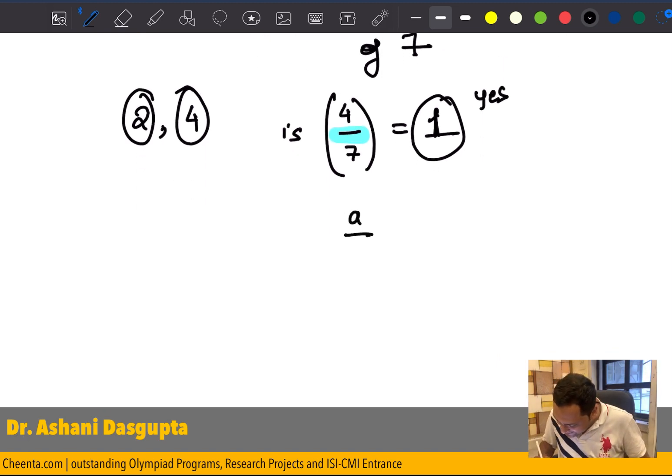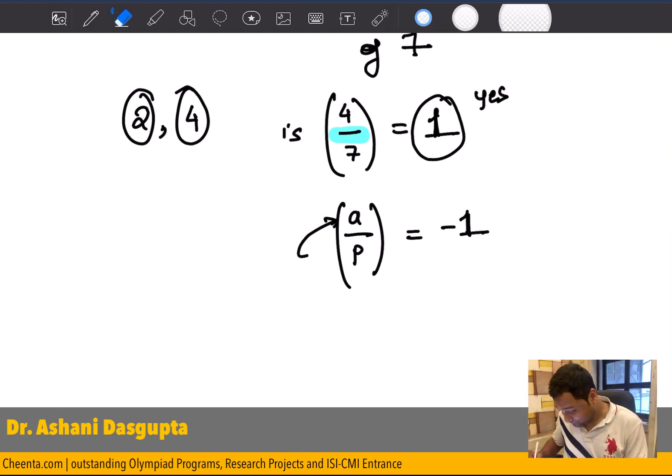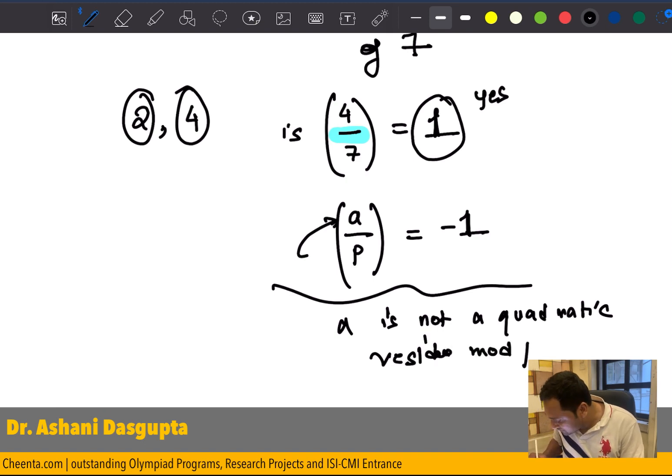So, if I write a by p is equal to minus 1, this is, again, the Legendre symbol. Then, a is not a quadratic residue modulo p. This means a is not a quadratic residue modulo p.